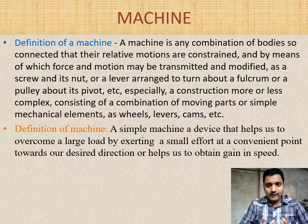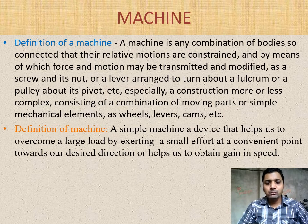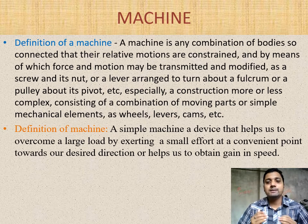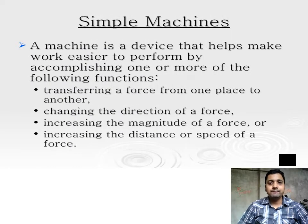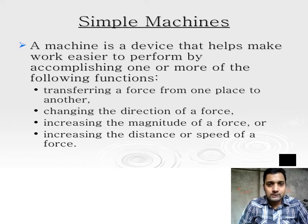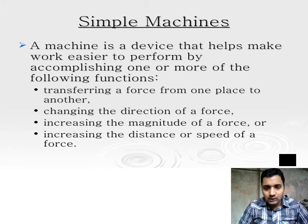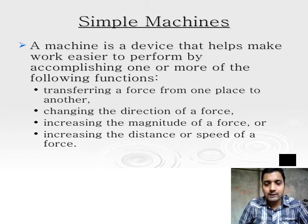Analyzing both definitions, you will find a machine is anything which makes our work easier and faster. Now coming to the functions of a machine: a machine helps to make our work easier and faster, and it performs different functions — transferring a force from one place to another means we can move a heavy load from one part to another using a machine.